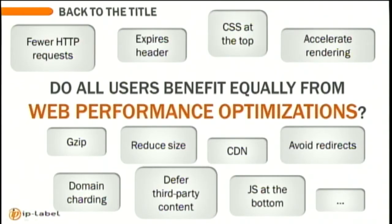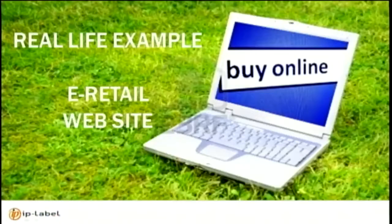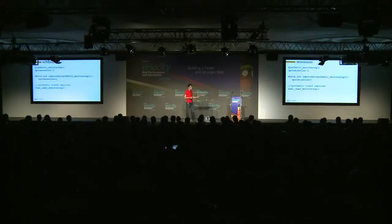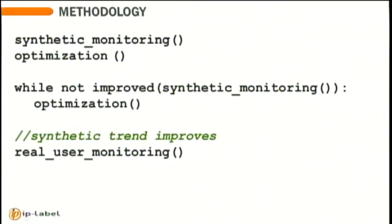So going back to my initial question: when you do website optimizations manually or with automation tools, how can you be sure that all of your users will benefit exactly the same way? Let's take a real-life example on an e-commerce website. Here's the methodology that I applied. Obviously, the best start is to have synthetic monitoring. When you do an optimization, there is no point in looking at real users if your synthetic trends are not changing.